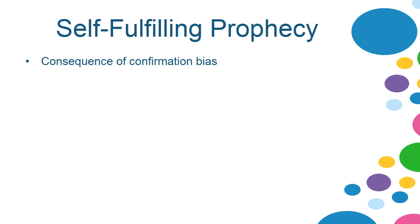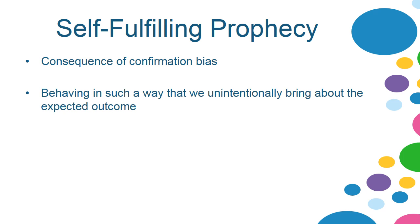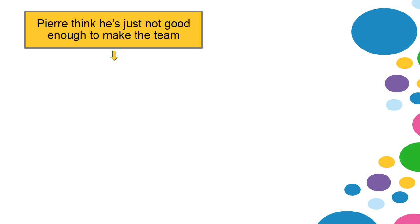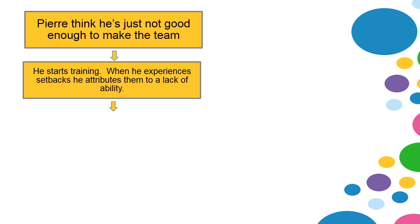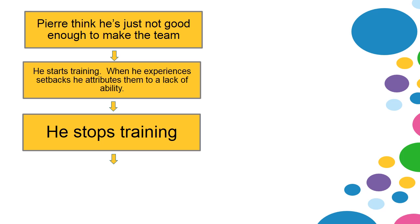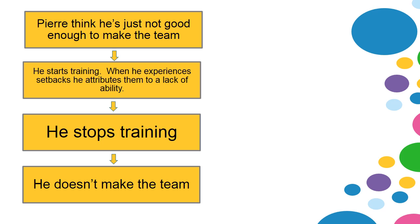Self-fulfilling prophecy is a consequence of confirmation bias, and it occurs when people behave in such a way that they unintentionally bring about the expected outcome. For example, Pierre thinks he's just not good enough to make the team. He starts training, but when he experiences setbacks, he attributes them to a lack of ability. He thinks to himself, well, I'm just not very good, that's why I'm having these problems. So he stops training, and once he stops training, he's pretty much not going to make the team.